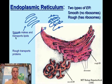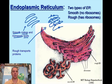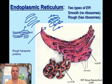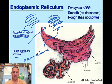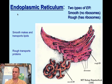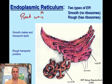Smooth ER transports lipids. Lipids, remember, are fats and oils — they're smooth, they're slick. So smooth ER makes and transports lipids. Rough ER only transports proteins. Think about why: ribosomes make protein, and they're found on the rough ER. So the ribosomes make the protein, and then the rough ER transports it. I think of the endoplasmic reticulum as a roadway. Smooth ER is the roadway that also makes the lipids. Rough ER is the roadway for the proteins made by the ribosomes.